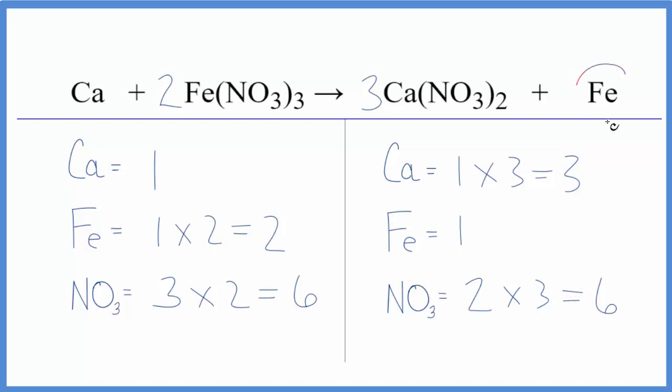Now it's pretty easy because the iron and the calcium are by themselves. I'll put a two as the coefficient here. One times two, irons are balanced. And then a three in front of the calcium. One times three, that's balanced. And we're done.